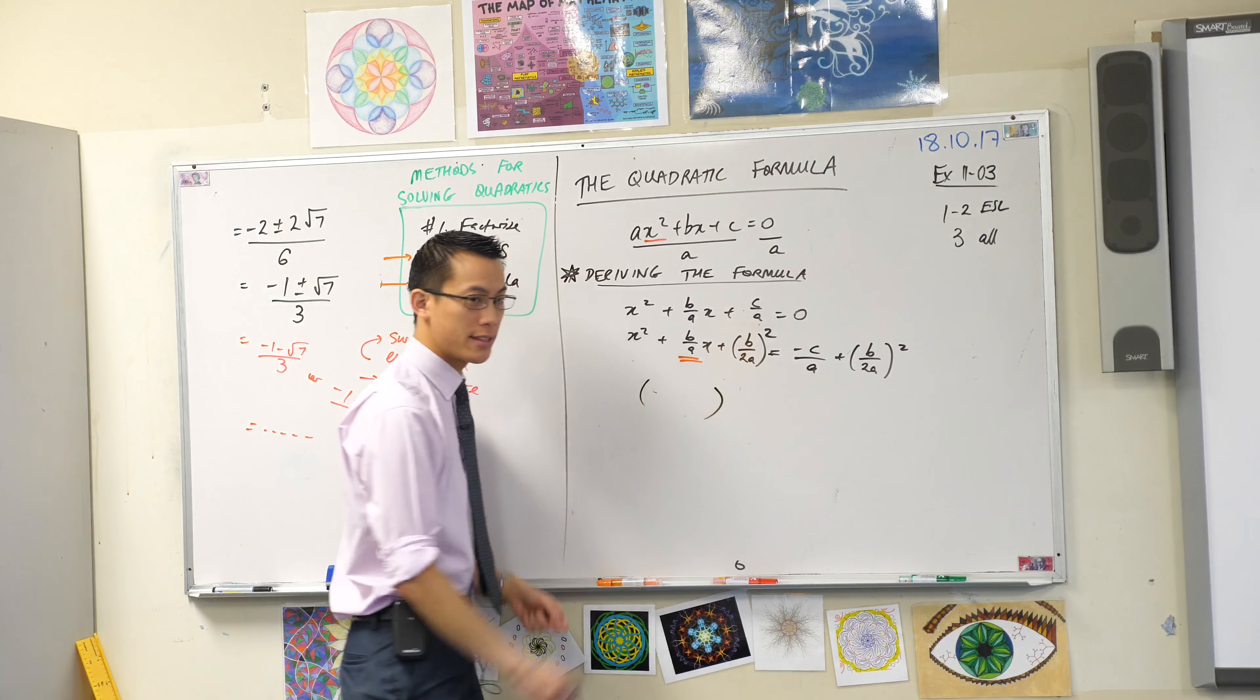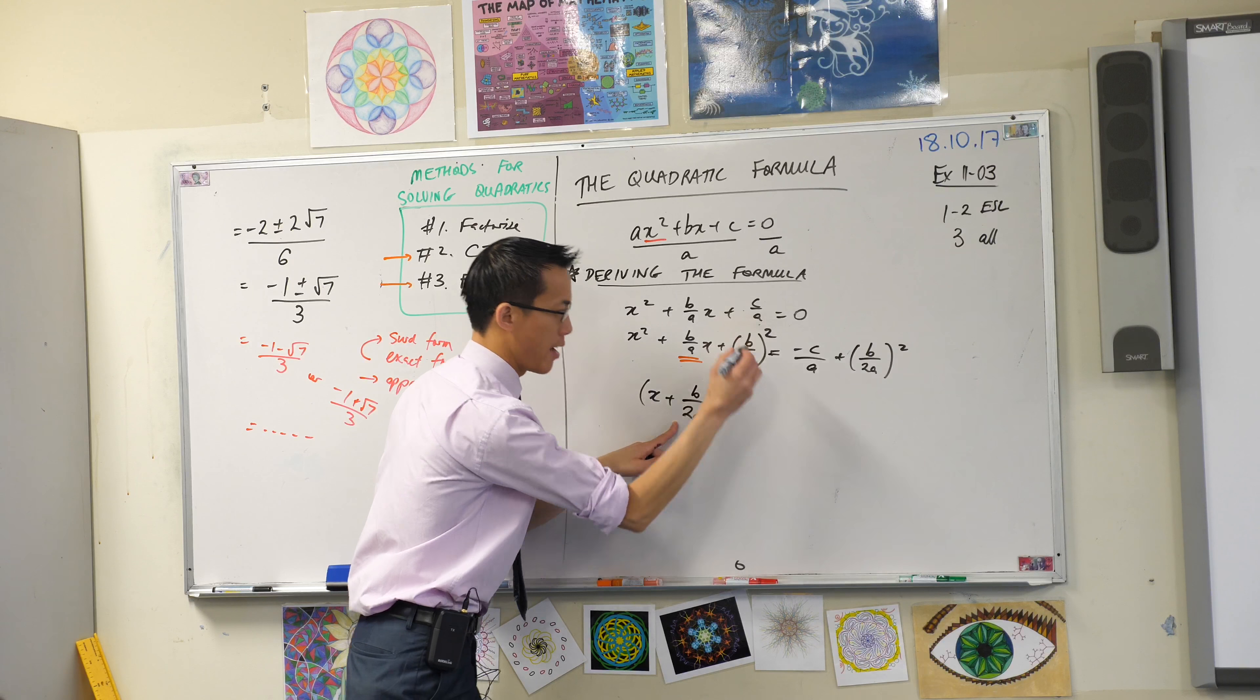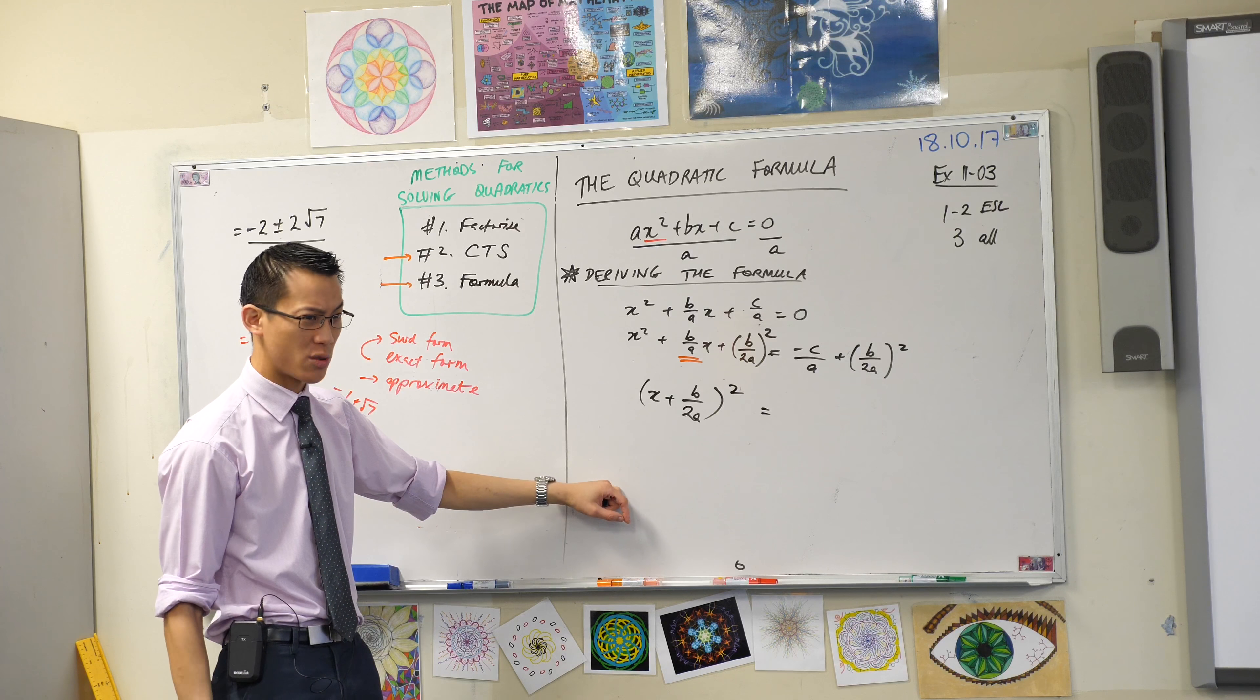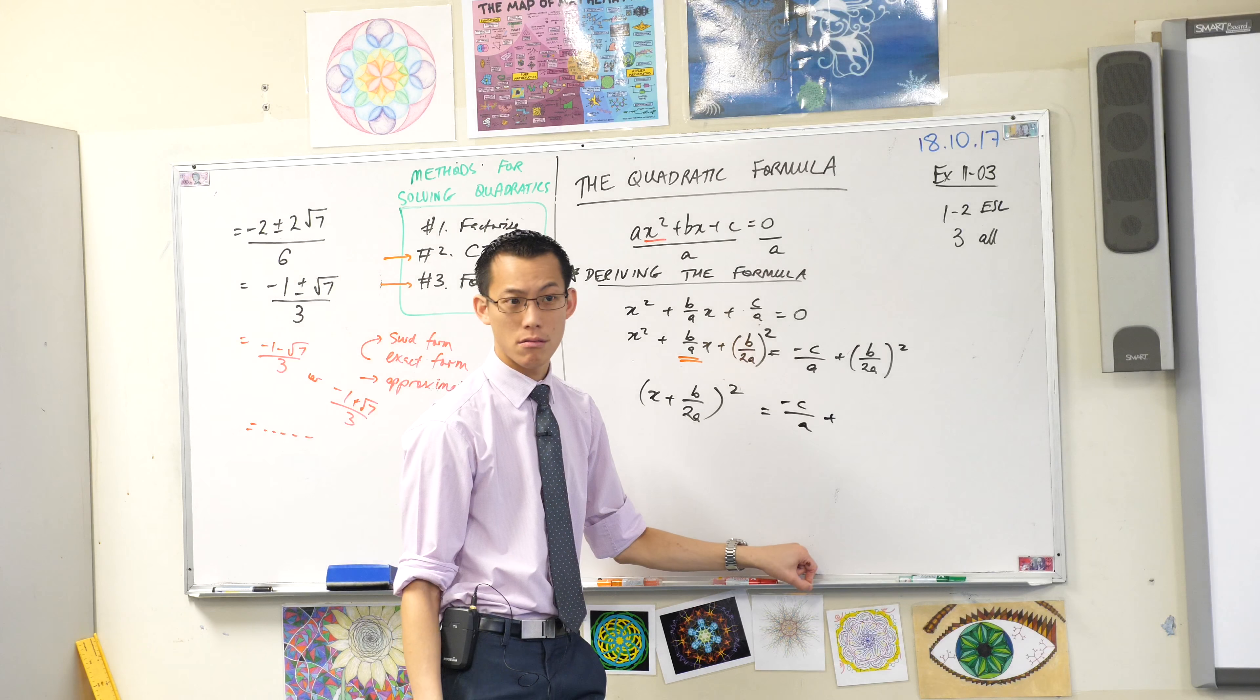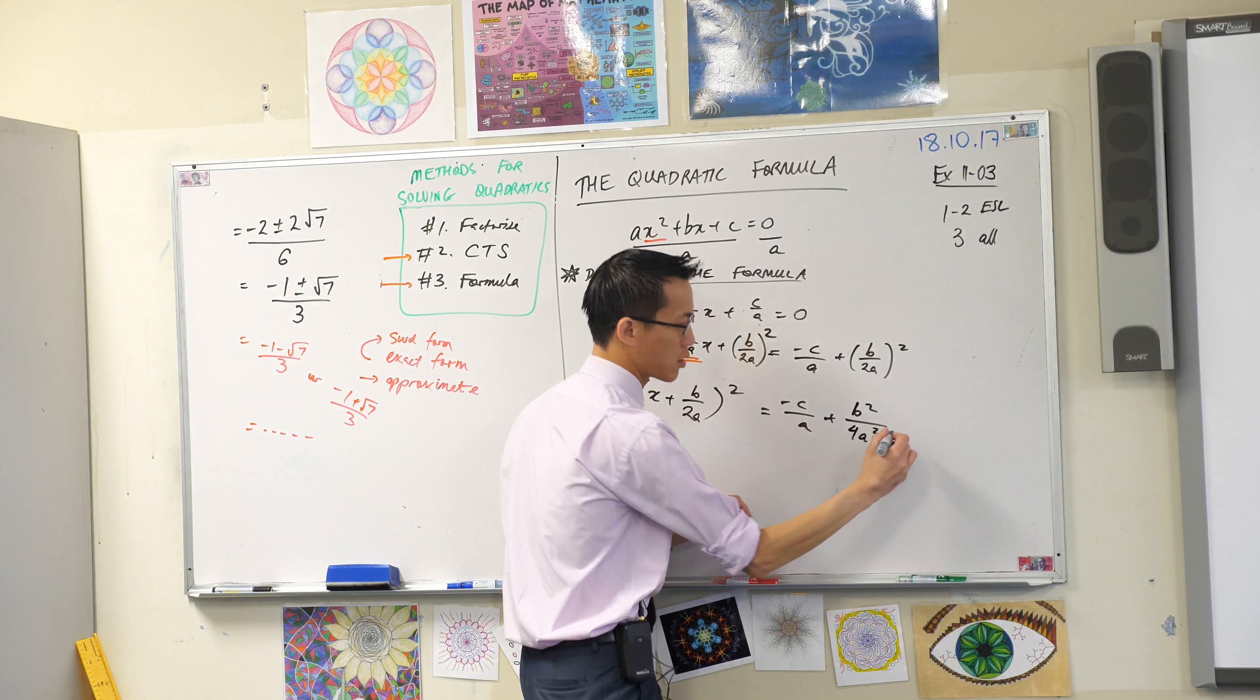Now what can I do? Well, this left hand side is now a square. At least that's why I added this thing. What's it the square of? And the answer is x plus b on 2a. If you take this thing squared and you expand it, you will land back on this line. On the right hand side, I've got a bit of a mess over here, so I need to tidy this up. This is minus c on a. What's this thing when I actually square it out? What happens to the numerator? It's going to be b squared. I'm going to have the denominator. It's going to be 2a times 2a, so this is 4a squared.